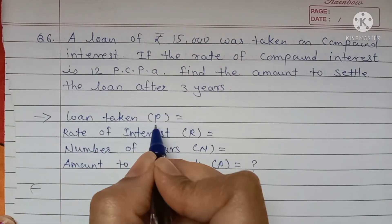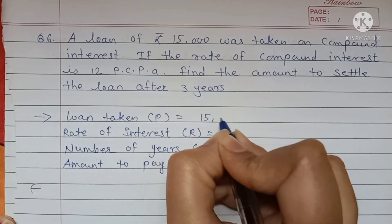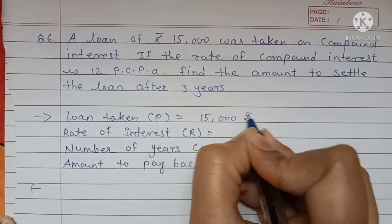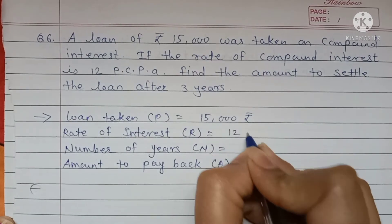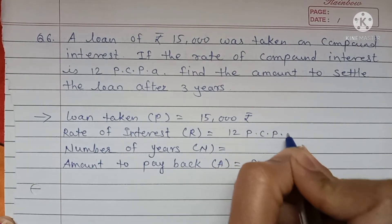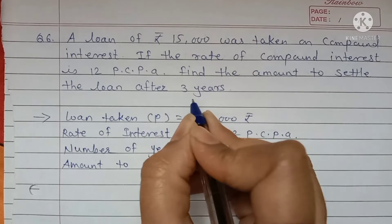First we will write down what is given. Loan taken means this is principal. Principal is given 15,000 rupees. Rate of interest is 12 PCPA. Number of years is 3.